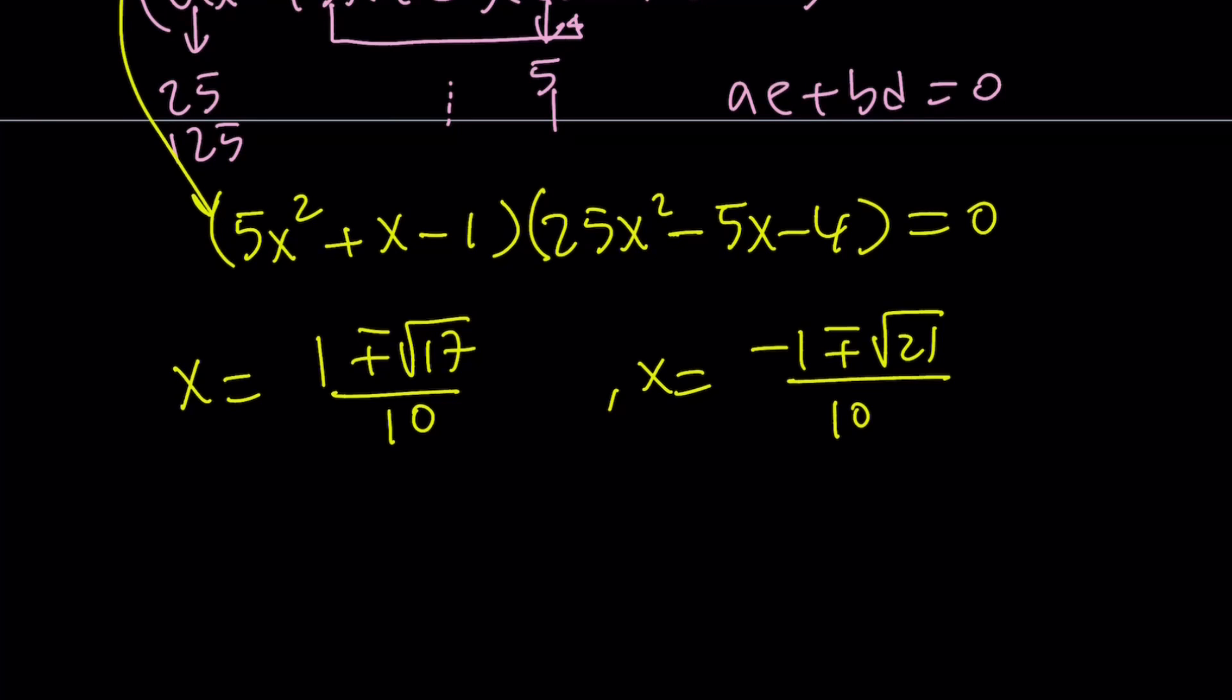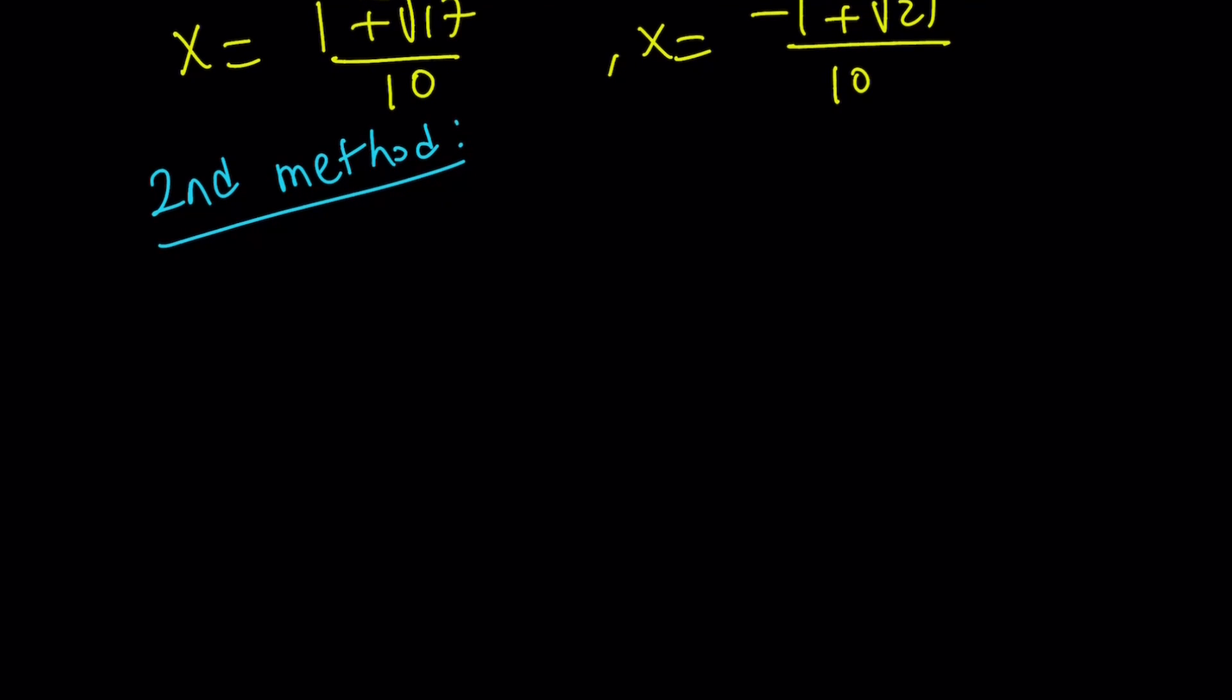There are four roots. At the end of the video, I'm going to show you a graph of this equation or the two equations that intersect. It looks like they're going to intersect at four different points because this quartic equation has four real solutions. Let's go ahead and take a look at the second method.